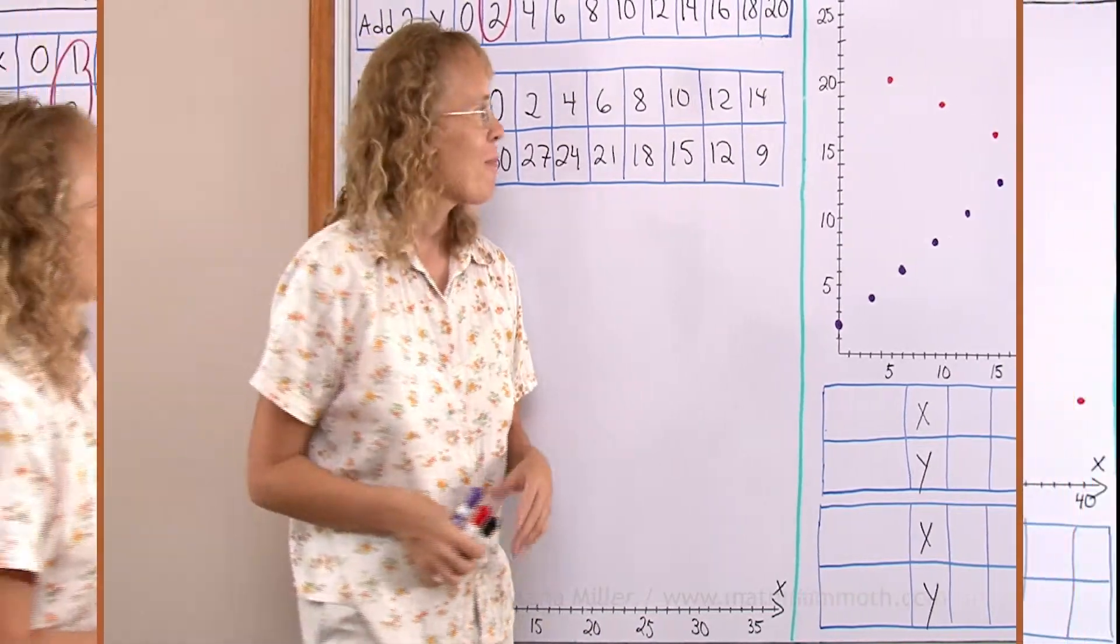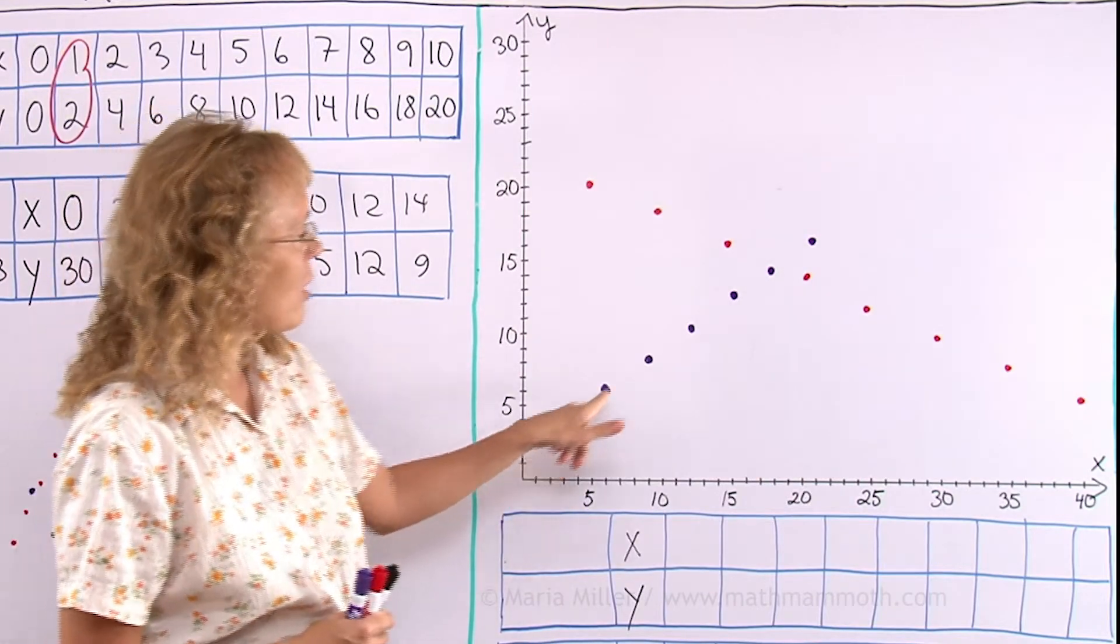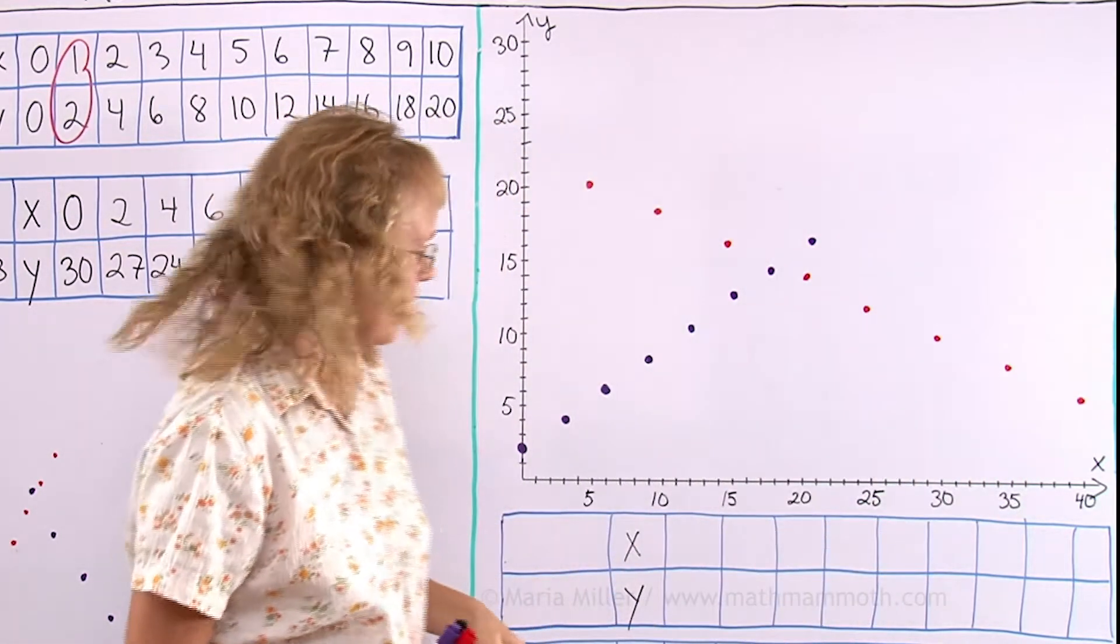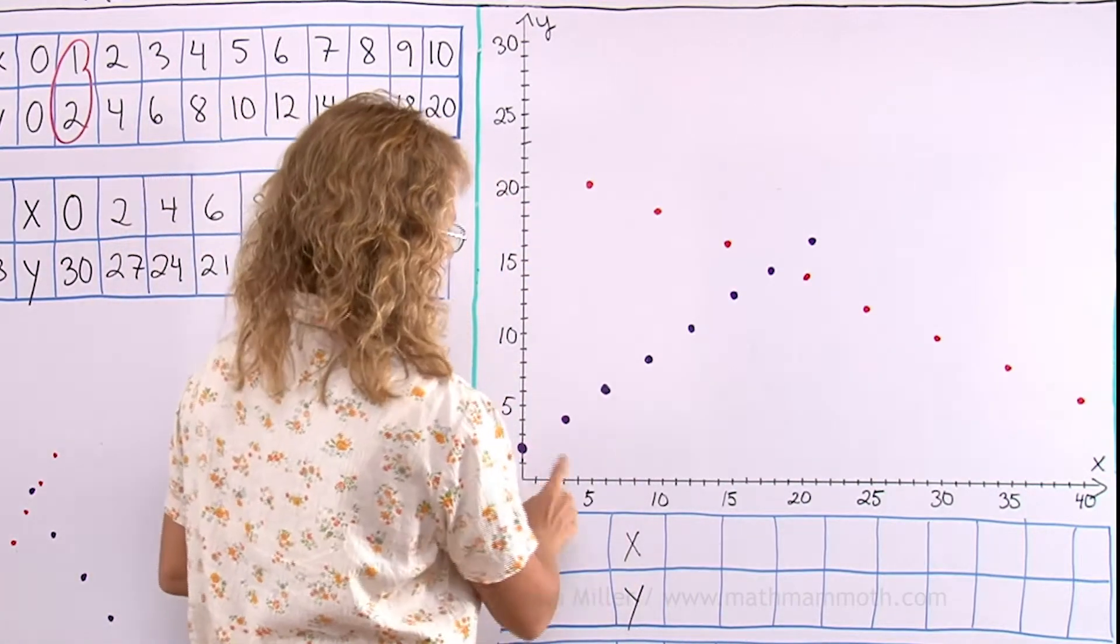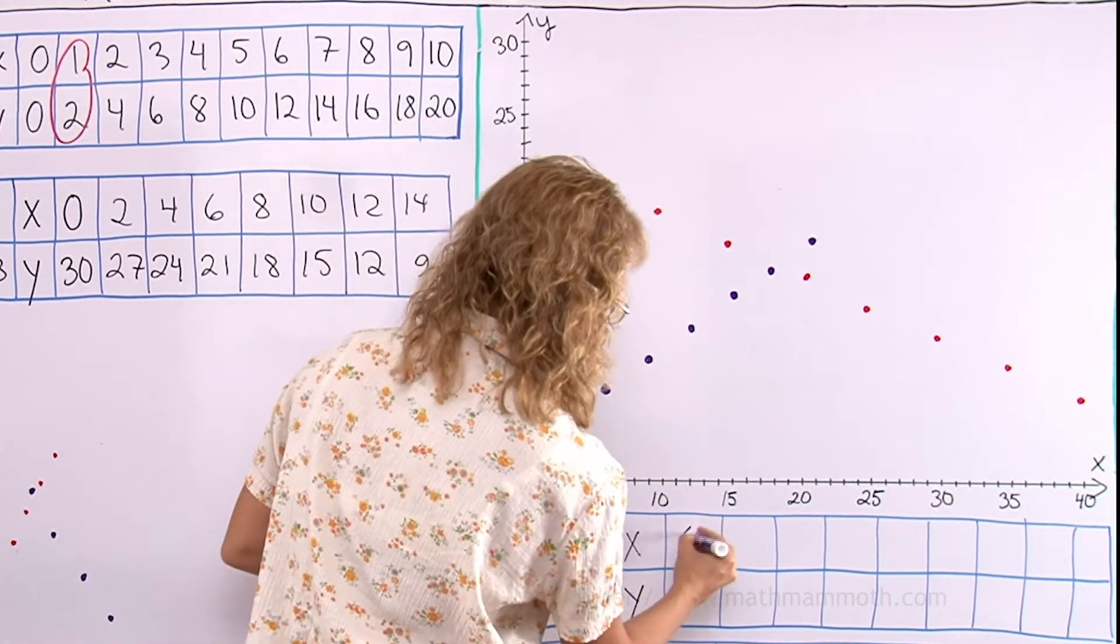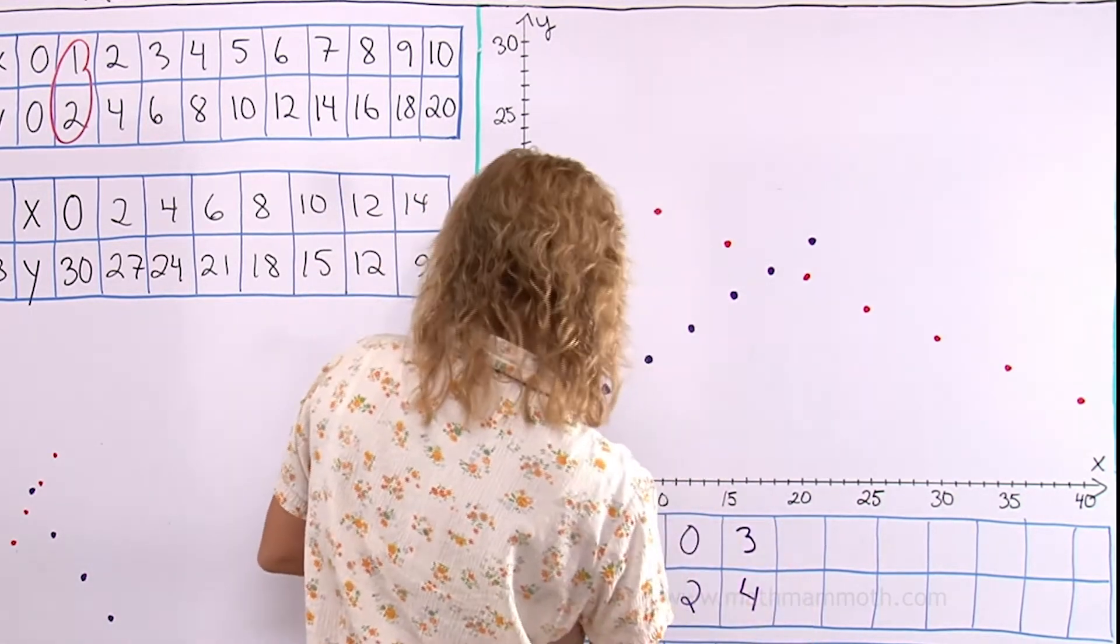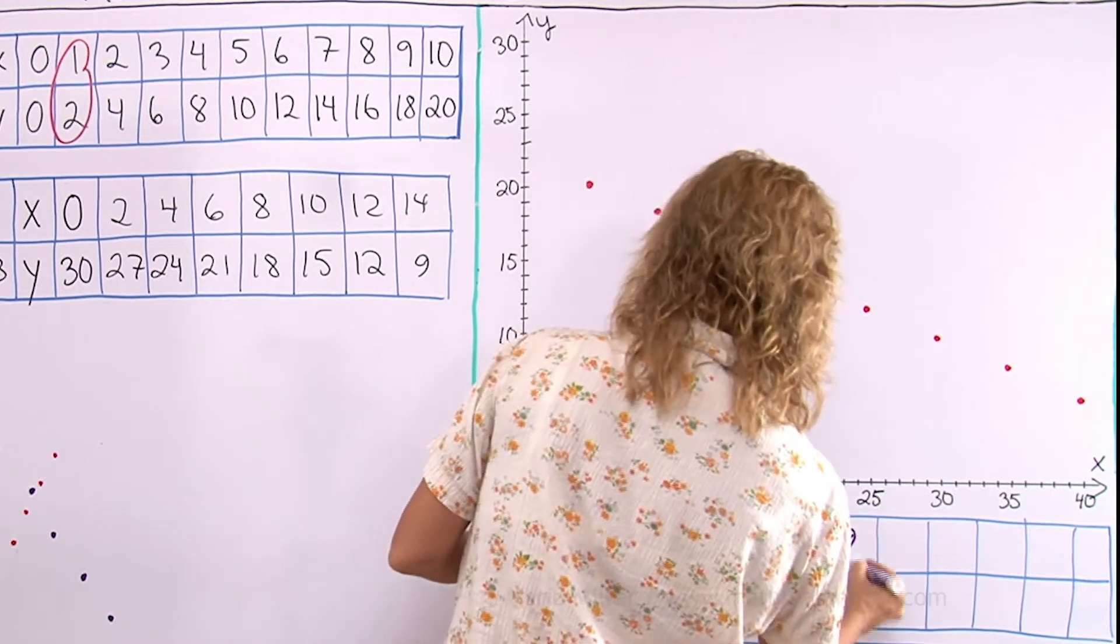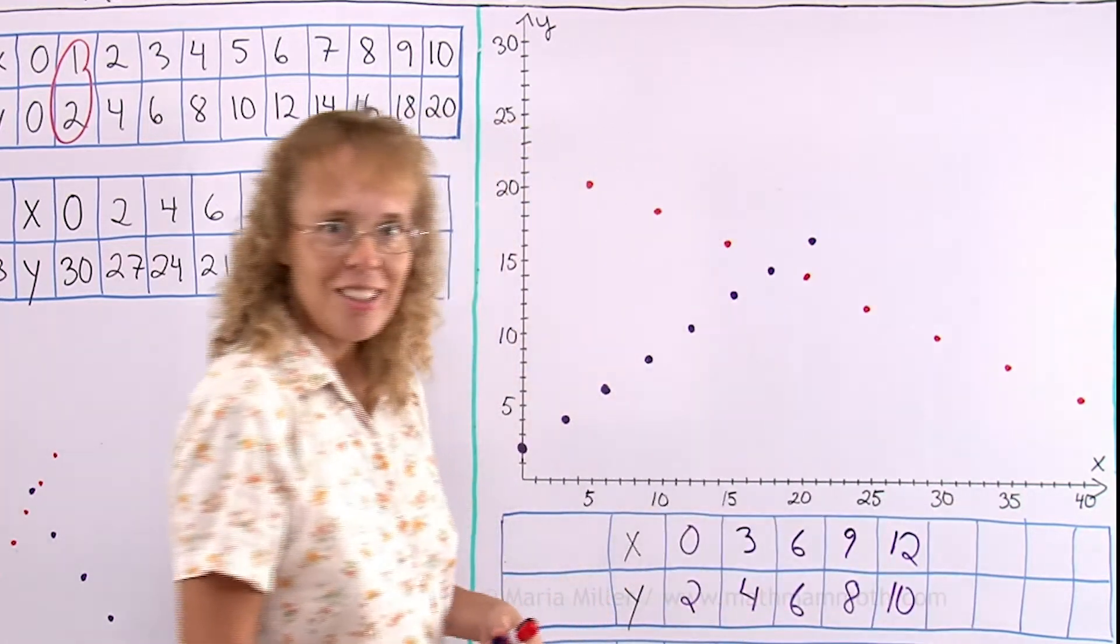Now let's try the opposite way. I already drew some linear patterns here in the coordinate grid. I drew some points that go on a line that way. I drew some points that go this way and let's check do we get some kind of pattern here with the numbers. Let me try the purple ones first. This one here would be 0, 2, then I have 3 and 4 and then 6 and 6. Then this one is 9 and 8. Then we have 12 and 10. Aha!